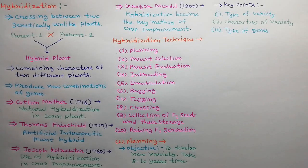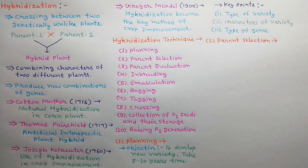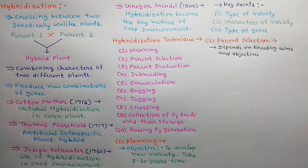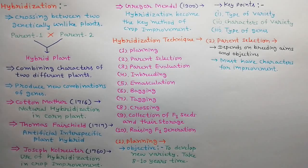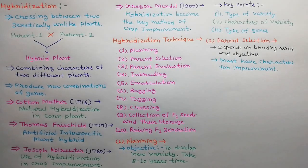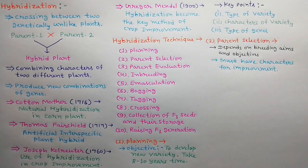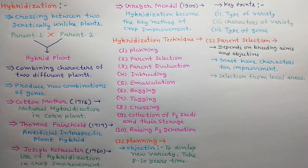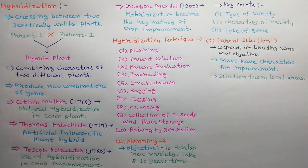The second step is parent selection. The selection of parents depends upon the aims and objectives of breeding. Parents must have characters in which improvement is possible. Parental plants must be selected from local areas.